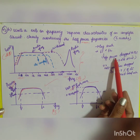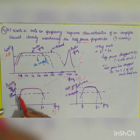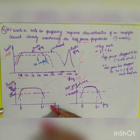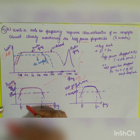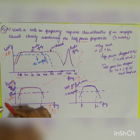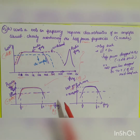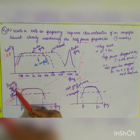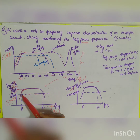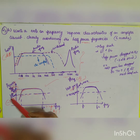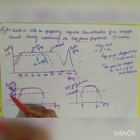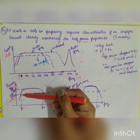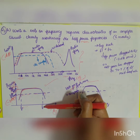For frequency versus power gain, you get your half power frequency where the power output drops to 50%. That gives your cutoff frequencies: f2 is the upper cutoff frequency and f1 is the lower cutoff frequency. This point is also called the minus 3dB point. The mid band is your P_max, and the half power frequency corresponds to 50% of P_max.